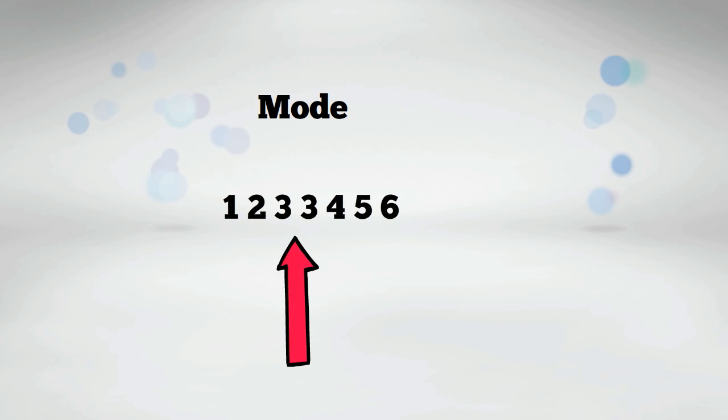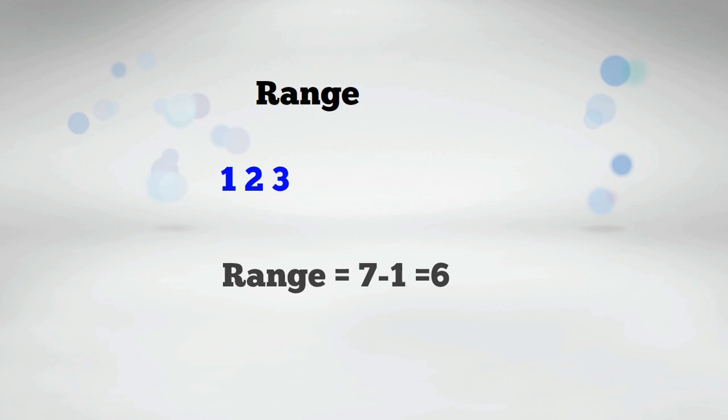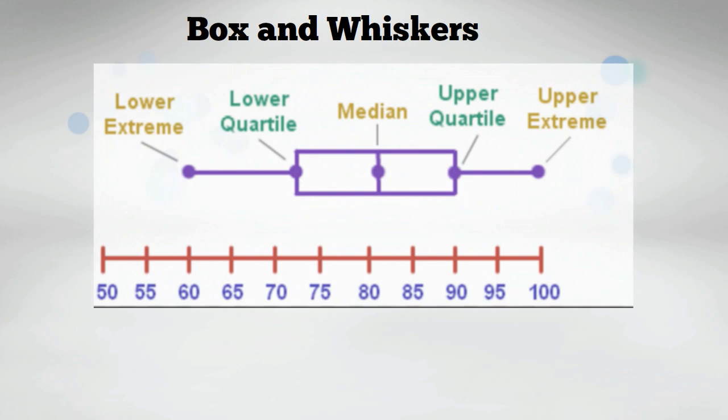The range is the difference between the lowest and the highest number. There are many ways to display data. One way is to plot your data. A box and whisker plot is a graph that divides the data into five sections.